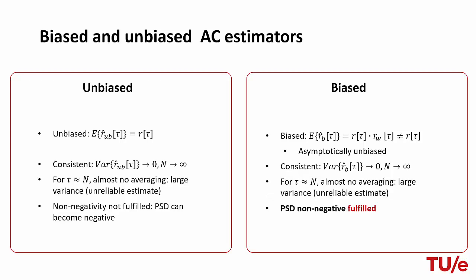Furthermore, both estimators are consistent, meaning their variance goes to zero for large N, and both suffer from large variance as the lag approaches the length of the signal. The most important difference in the context of spectral estimation is that while the unbiased estimator may provide a negative spectral estimate, the non-negativity of the power spectral density is guaranteed when using the biased estimator.